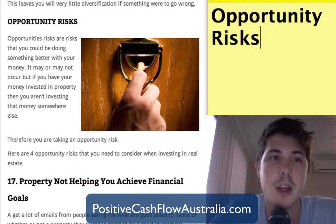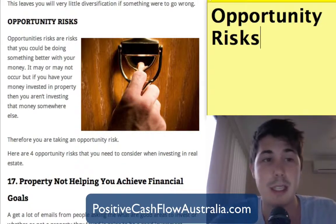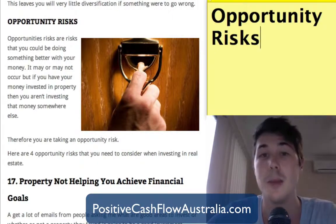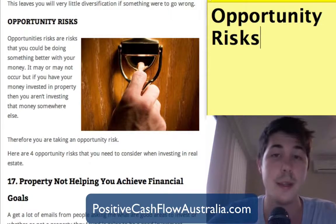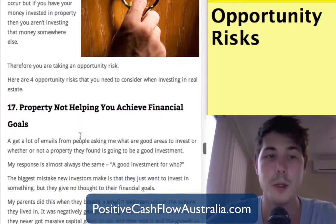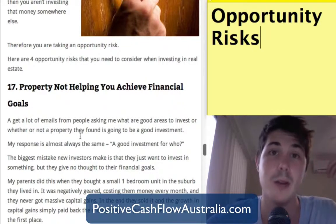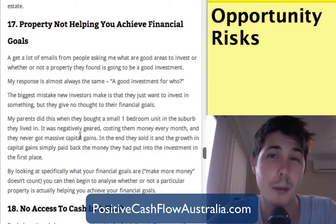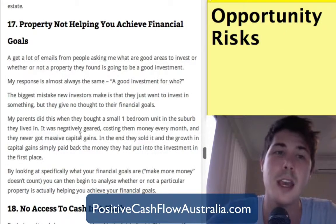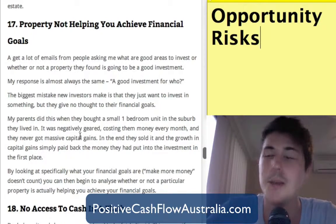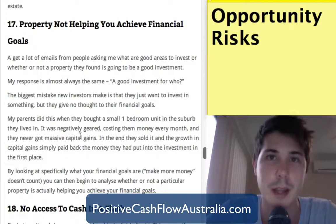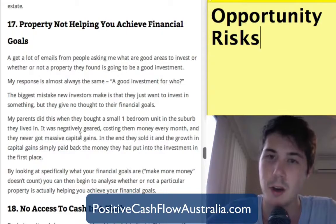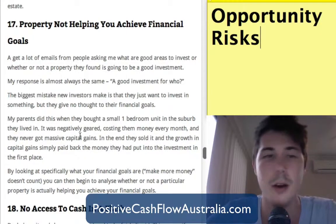The last category is opportunity risks — risks that you could be doing something better with the money you're investing in this property. If you have money invested in property, that means you've got money you're not investing somewhere else, so you're always taking that opportunity risk. There are four opportunity risks to consider when investing in real estate and positive cash flow property. Risk number seventeen is the property not helping you achieve your financial goals.